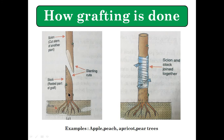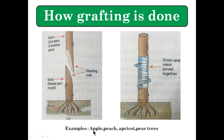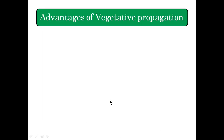As you can see in the picture, two stems are taken from two different plants. The one fixed in the soil with roots is the stock, and the other is grafted onto it. Both are given slanting cuts — this is the technique used in grafting — so that the phloem and xylem of both stems come in contact with each other. The scion, which is without roots, is then joined to the stock and wrapped with polythene, plastic sheet, thread, or cloth. After few days it heals and grows into a new plant. Examples include apple, peach, apricot, and pear trees.